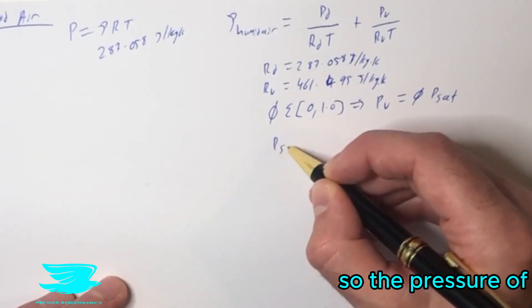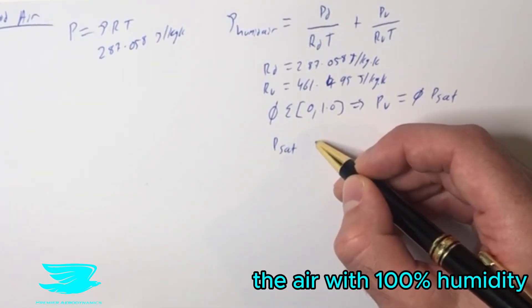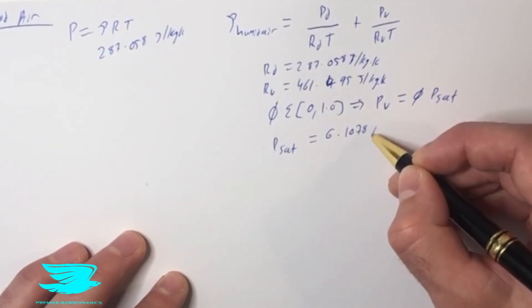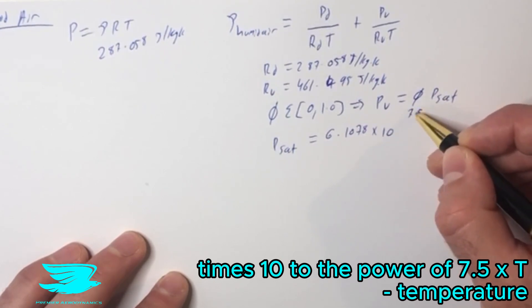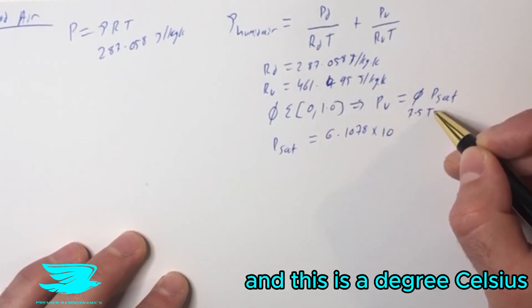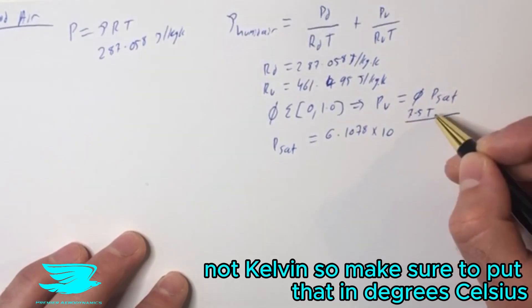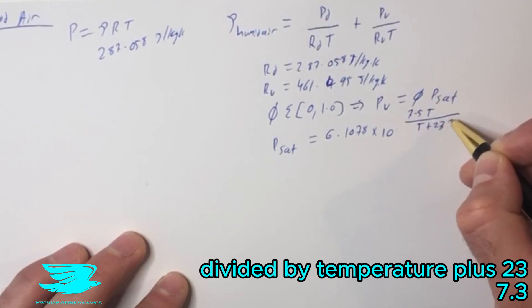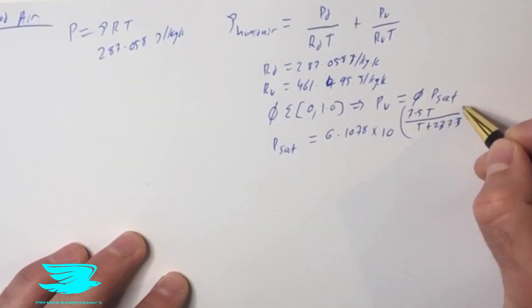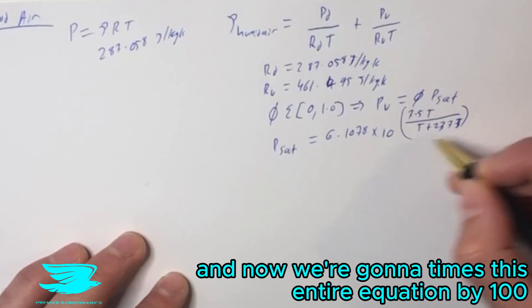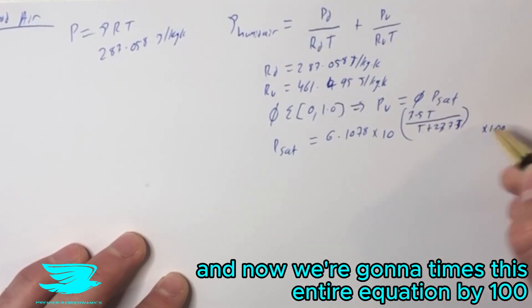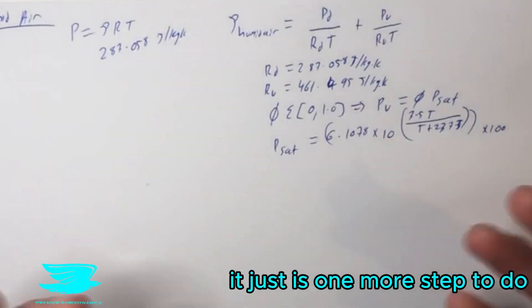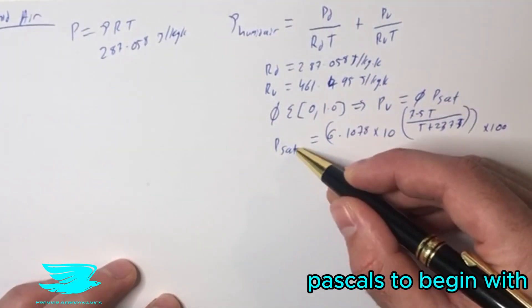The pressure of the air at 100% humidity equals 6.1078 times 10 to the power of 7.5 times temperature, and this is in degrees Celsius, not kelvin, divided by temperature plus 237.3. We're going to times this entire equation by 100 to get it into pascals. If you don't do this, it'll be in hectopascals.